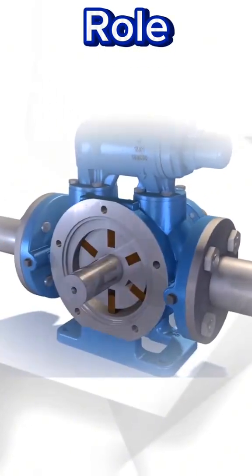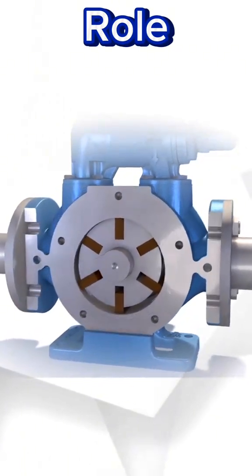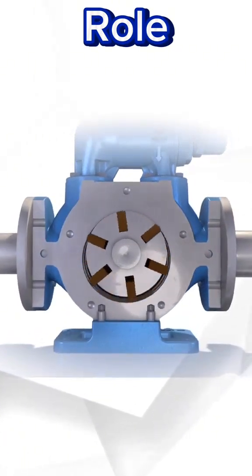Rotary vane pumps have a rotor with sliding vanes inside a fixed cavity, drawing in fluid and directing it at a steady rate, making them ideal for applications requiring low-pressure operation, like vacuums and cooling systems.